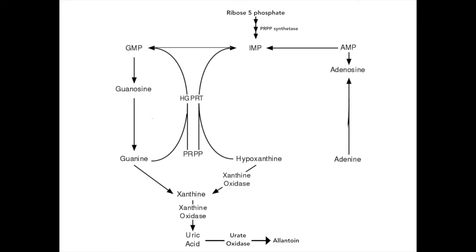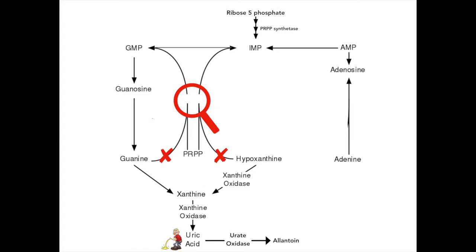If for some reason the enzyme HGPRT — which turns guanine and hypoxanthine into their nucleotide forms — is absent, then the only option is for them to be disposed of via the excretory pathway: conversion to xanthine, then uric acid, and then finally allantoin.